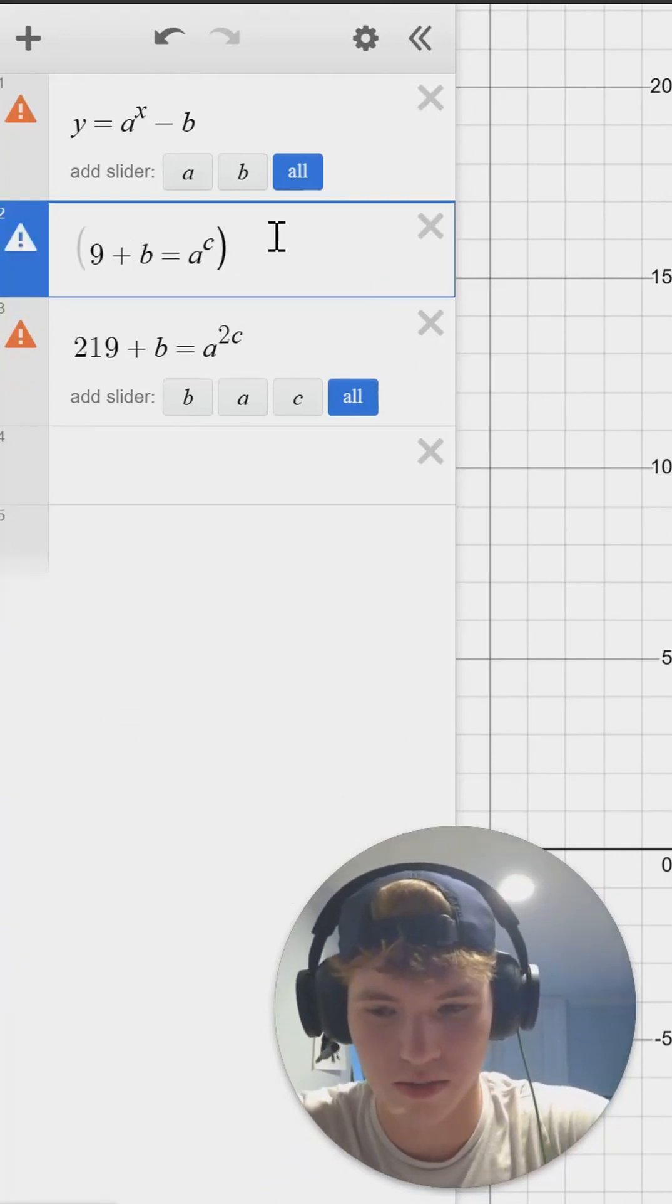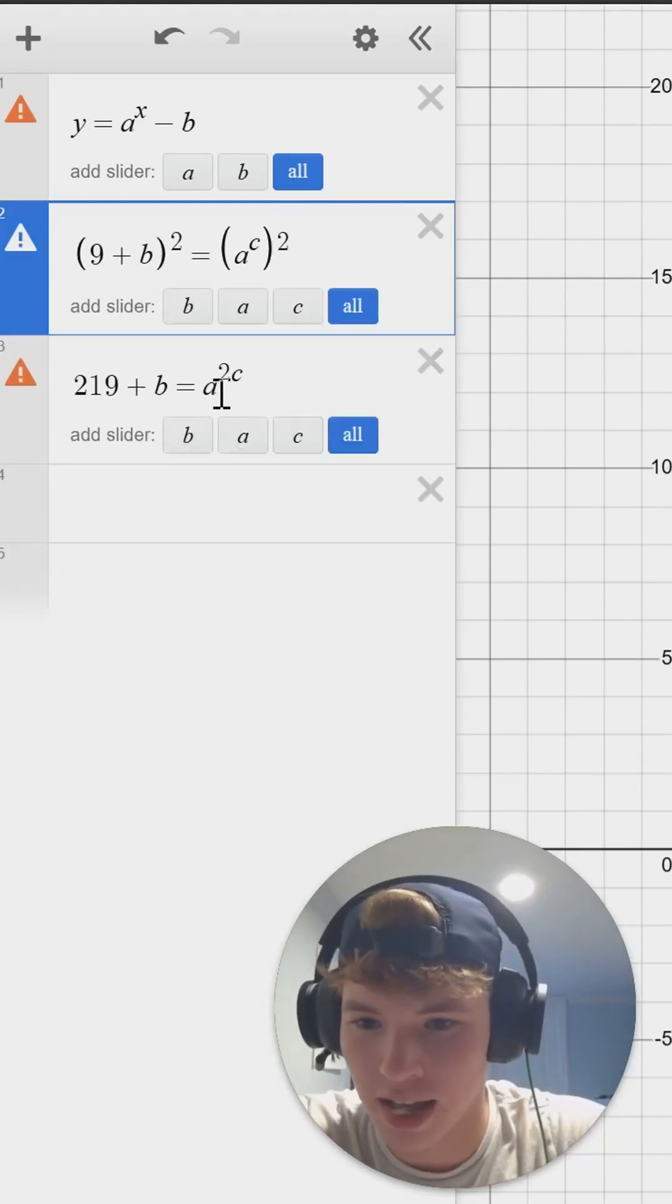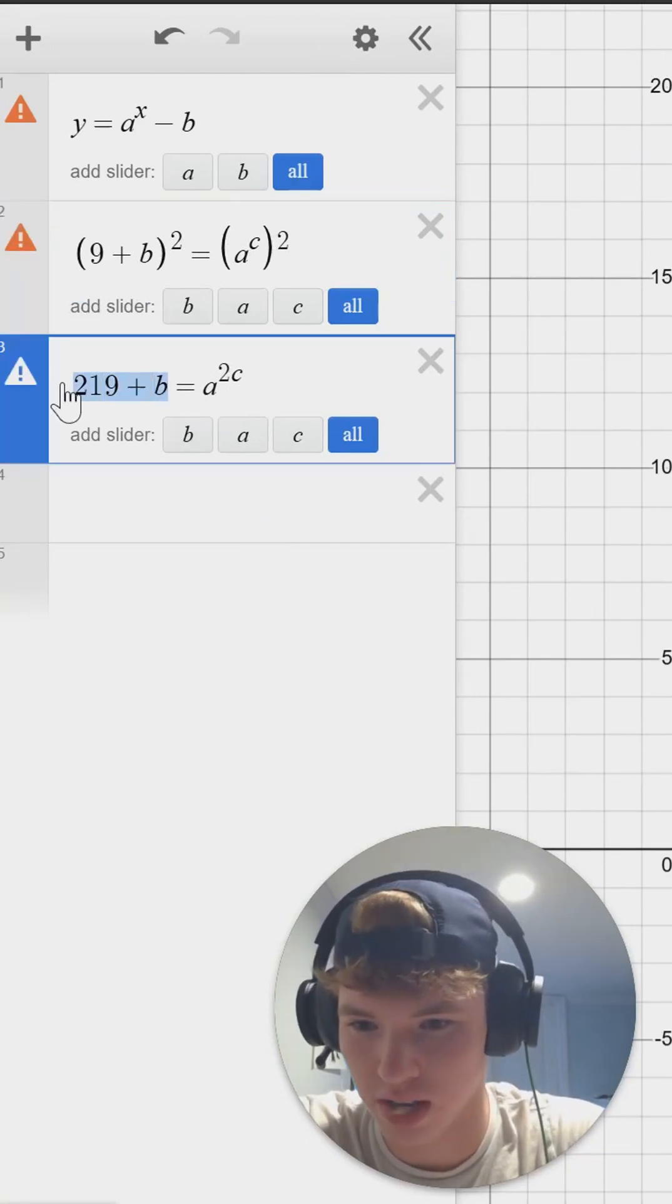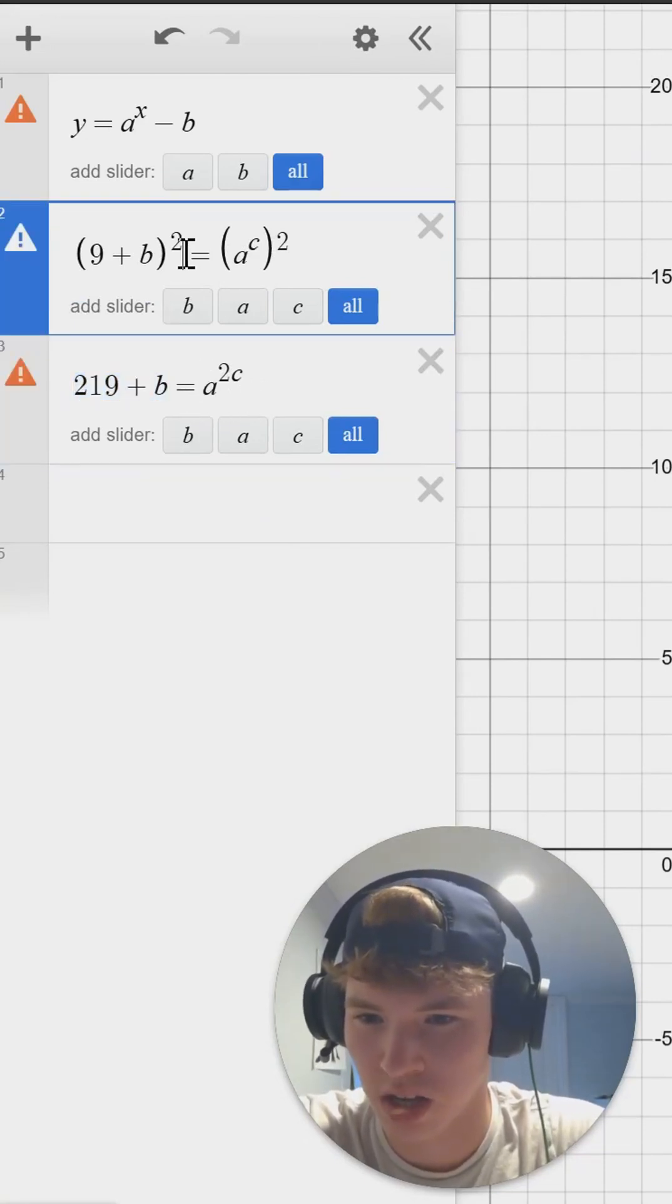If we square both sides of these, we now see that A to the 2C and A to the 2C on both these are equal. So that means we can set B plus 219 and 9 plus B squared equal to each other.